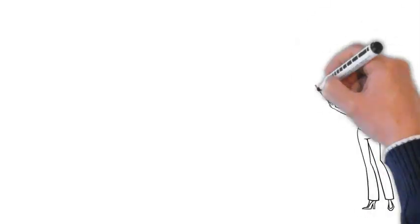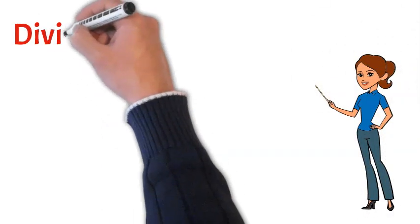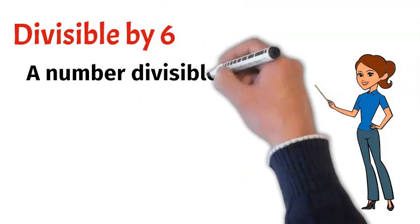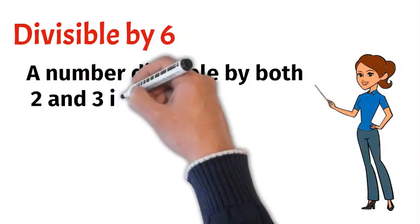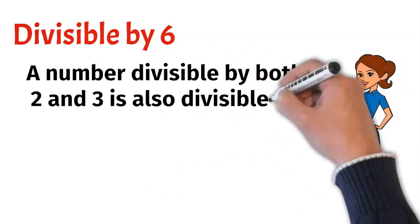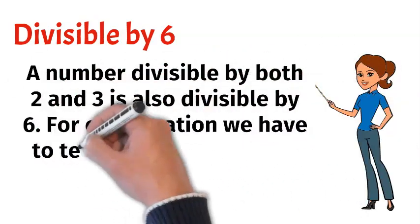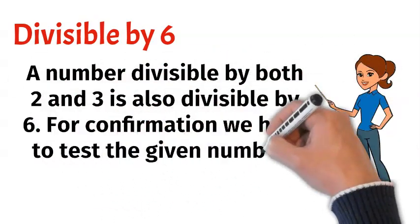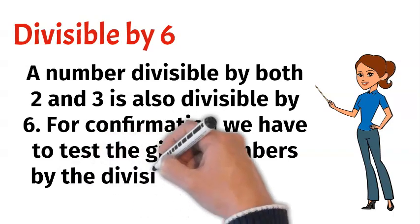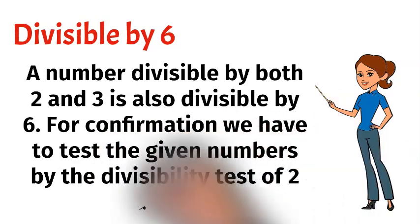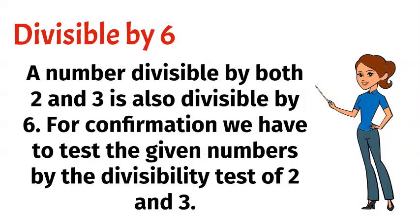Divisible by 6. A number divisible by both 2 and 3 is also divisible by 6. For confirmation, we have to test the given numbers by the divisibility test of 2 and 3.